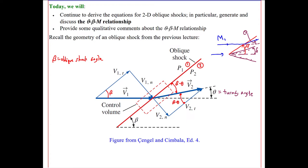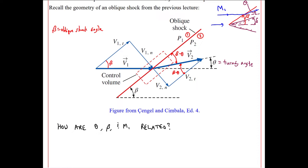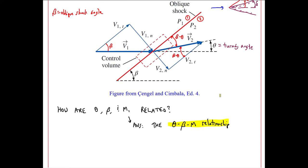1 is before the shock and 2 is after the shock. Now we need to figure out how theta, beta, and M1 are related. The answer is an equation called the theta beta M relationship. I guess they couldn't come up with a more clever name. I'll derive that relationship here.